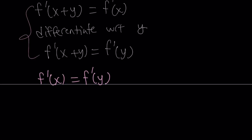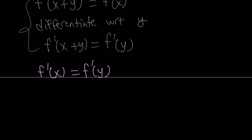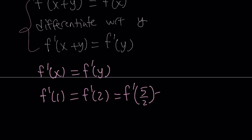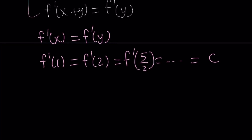This is really cool because x and y can be different variables — they can be the same, but they don't have to be, so they're kind of free variables. This basically tells us that no matter which variable you use, the derivative of f is going to be the same. For example, if you replace x with 1 you get f prime of 1, replace y with 2 you get f prime of 2, and so on. All the derivatives at any point are equal, so it can only happen if the derivative equals a constant — let's call it c.